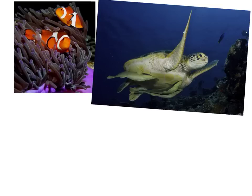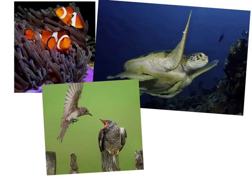An example of mutualism is the clownfish and the anemone — they work together to survive. An example of commensalism is the sea turtle and the remora eel: the remora eel eats scraps from the sea turtle but the sea turtle is not harmed in any way. An example of parasitism is the spotted flycatcher feeding a cuckoo chick, believing it is its own young. This is parasitism because the spotted flycatcher works harder to feed the cuckoo, and its own babies may not get enough food. The spotted flycatcher is the host and the cuckoo chick is the parasite.